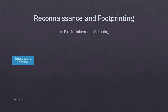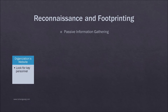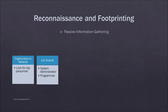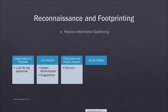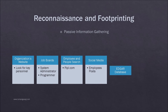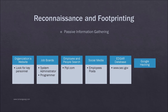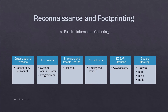The goal of reconnaissance and footprinting is to identify information about the organization without the use of active actions. From an ethical hacking perspective, the focus is on identifying information about the organization under investigation without the organization being aware that the information has been accessed. This can be performed using techniques such as accessing the organization's website to gather information like emails, phone numbers, names, and job titles.